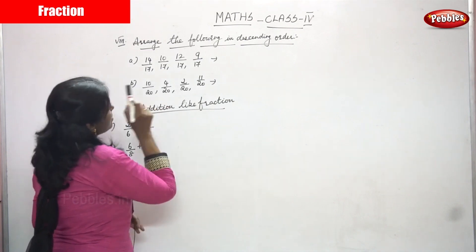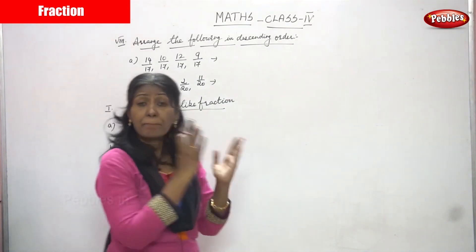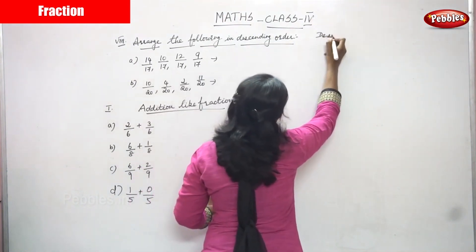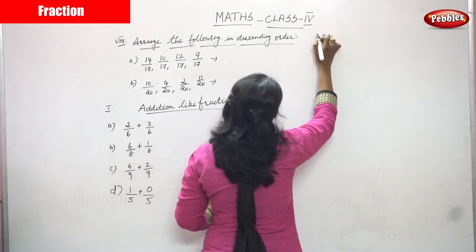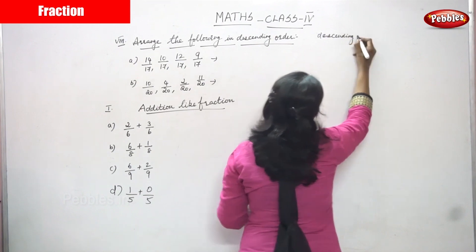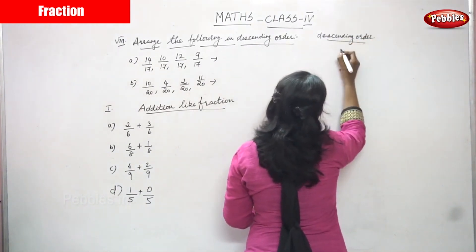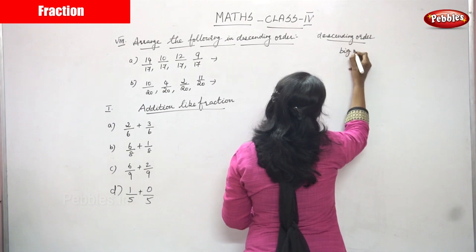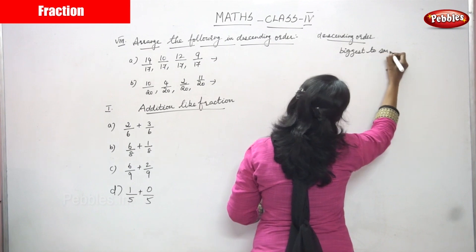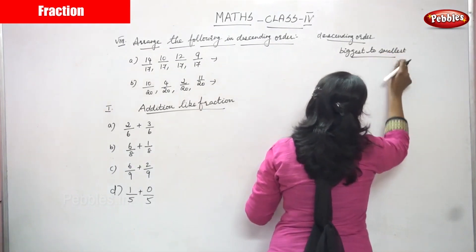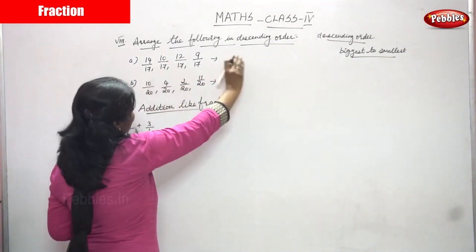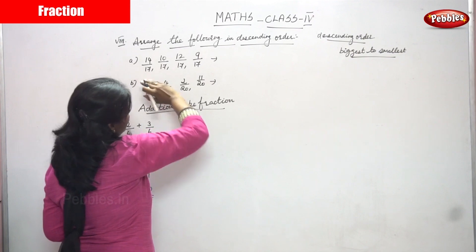So we have to arrange the following in descending order. Descending order means biggest to smallest. So descending order means that is biggest to smallest. This is very important — don't forget: biggest to smallest. So you have to arrange in descending order, from biggest number to smallest number.